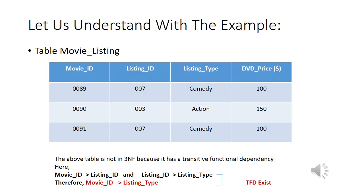Let us understand the concept of Third Normal Form with an example. I have taken one table — Movie Listing — with certain attributes. When you observe this table, you will see that it is not in 3NF because there exists a transitive functional dependency. Movie ID determines Listing ID, meaning Listing ID is functionally dependent on Movie ID. Again, Listing Type is functionally dependent on Listing ID.